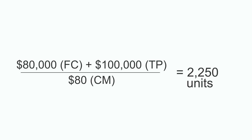Now let's plug in the numbers into the formula: $80,000, which is the fixed cost, plus the targeted profit of $100,000, divided by the contribution margin per unit.